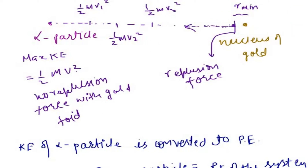So R_minimum equals 2K·Q1·Q2 / Mv². That is the value of R minimum — the closest distance of approach — when a charged particle with atomic number Z1 is thrown with velocity V towards another charged particle with atomic number Z2, giving charges Z1·e and Z2·e respectively.